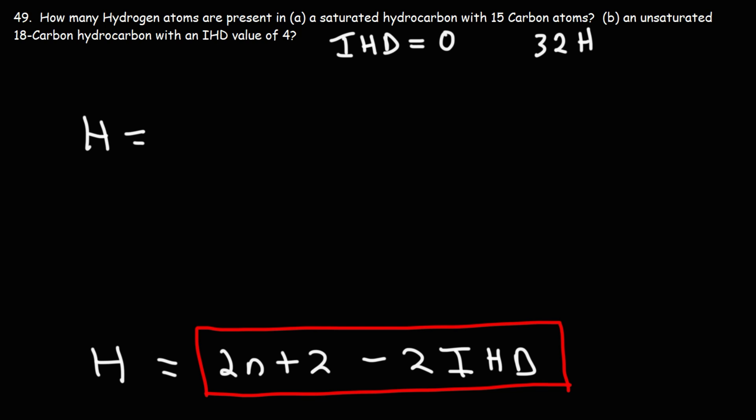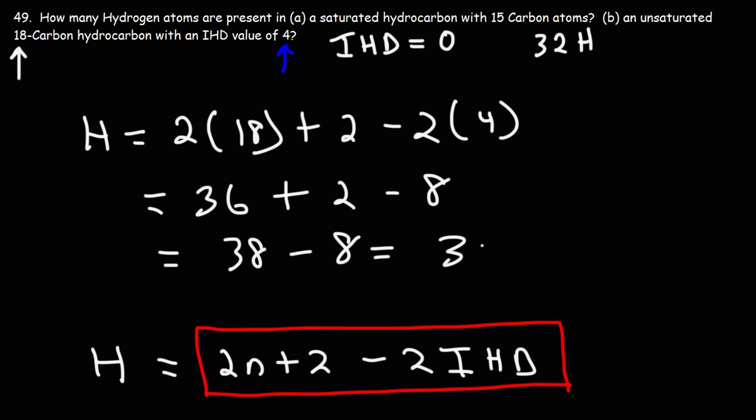So using the formula, we have 18 carbon atoms and an IHD of 4. So we're going to replace N with 18, and we're going to replace the IHD value with 4. So 2 times 18 is 36, and 2 times 4 is 8. 36 plus 2 is 38. 38 minus 8 is 30. So for B, we have 30 hydrogen atoms.